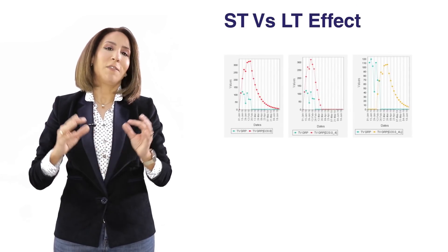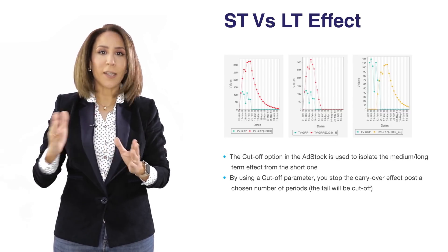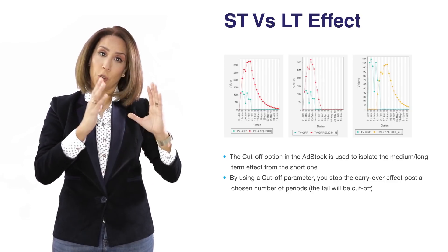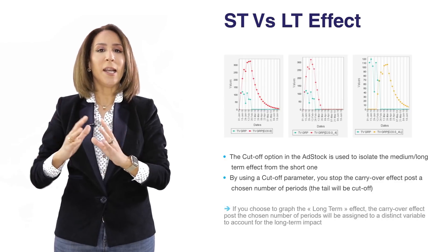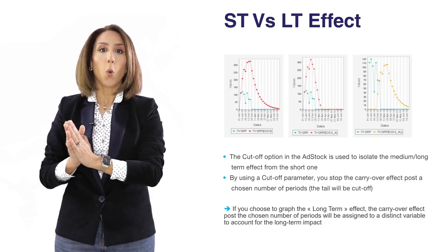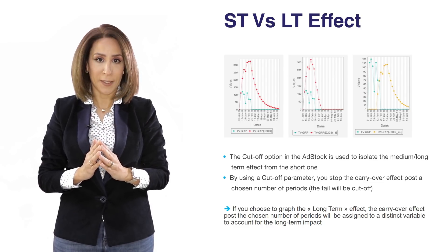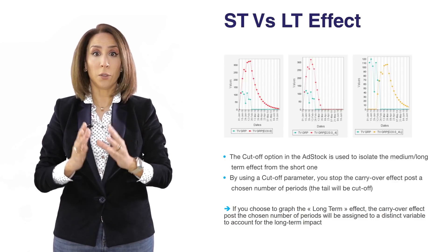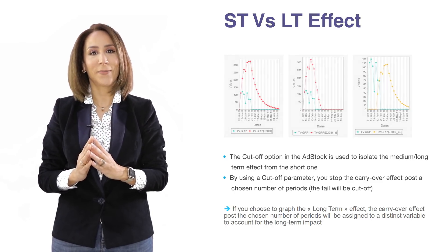There is an interesting variation of the ad stock or decay transformation: the cut-off point. What the cut-off point allows you to do is cut the carry-over starting from a certain number of periods, in order to distinguish between the short-term effect of advertising and the medium- to long-term effect of advertising. Any tail that goes beyond the cut-off point will be accounted for as medium- to long-term effect, while any carry-over that happens before the cut-off point will be accounted for as short-term effect. That gives us two variables we can test later in the modeling stage.